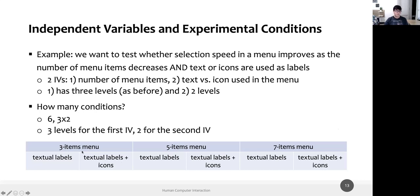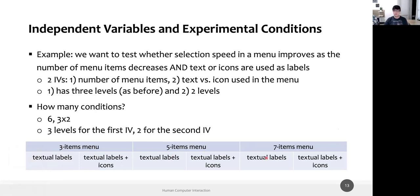We have two independent variables: in this case, three item menu, five item menu, and seven item menu, each in two configurations — text-only labels and label plus icon. Just for a running example, we can continue with just the three item and five item menus, skipping seven items — so one independent variable with two levels: three items menu and five items menu, with text-only labels.